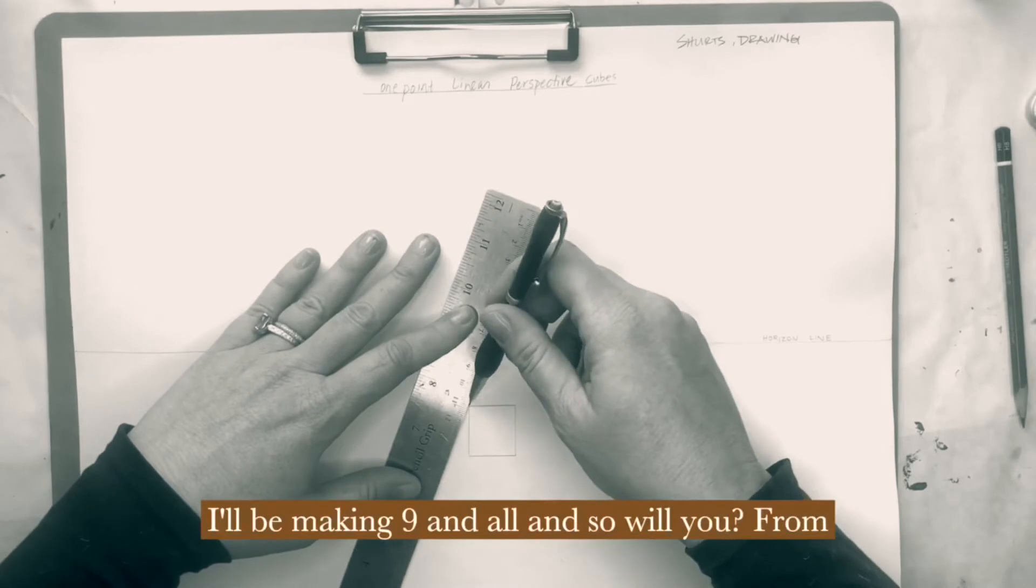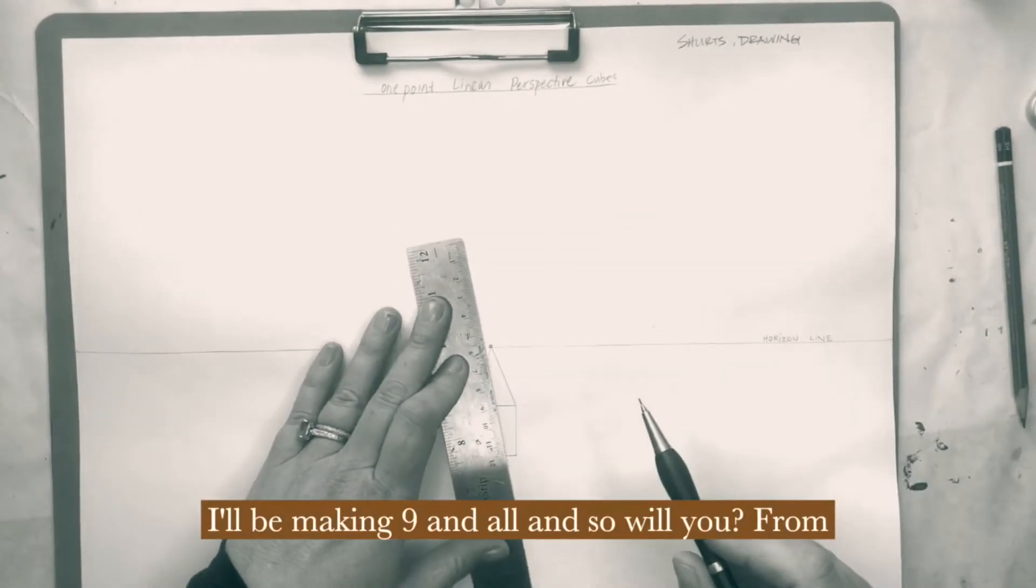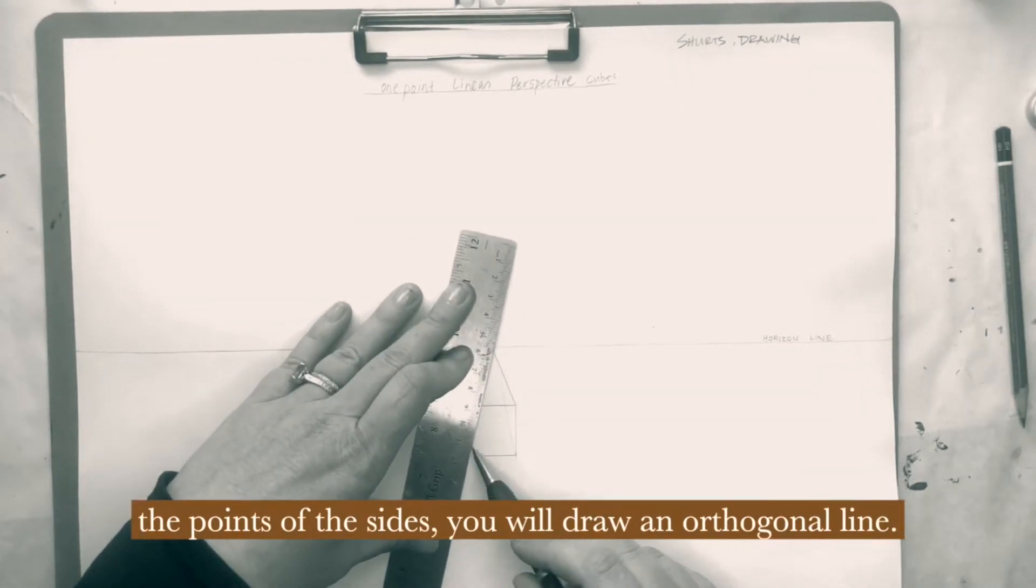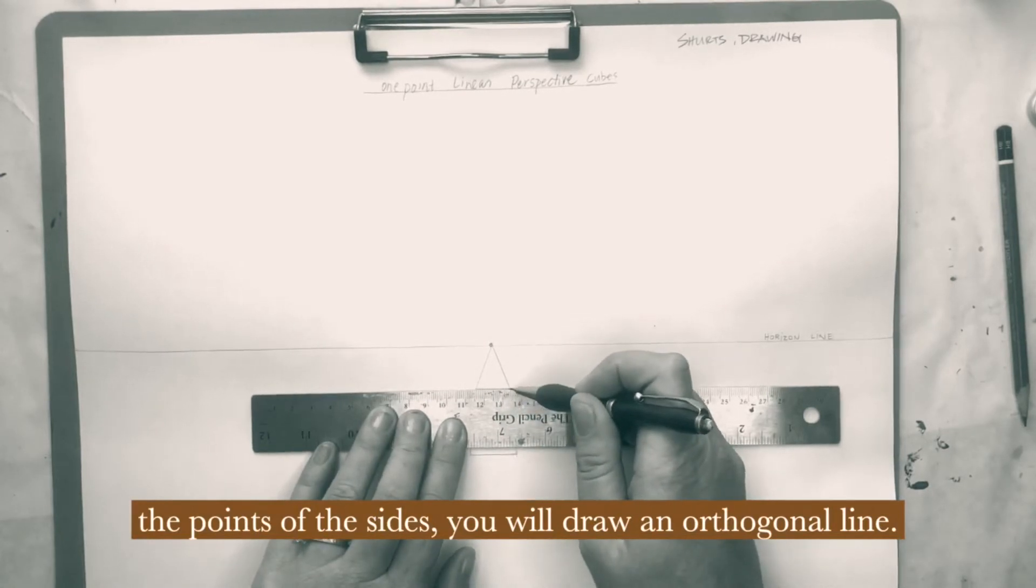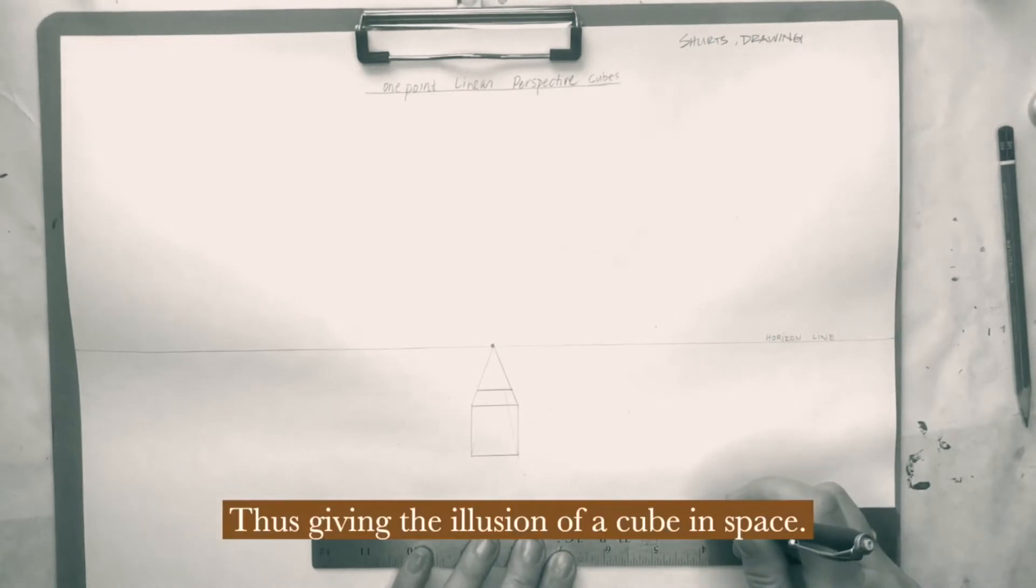From the points of the sides, you will draw an orthogonal line, is what it's called, to the vanishing point. Thus, giving the illusion of a cube in space. You went from a square to now 3D, a cube.